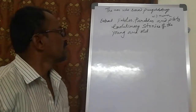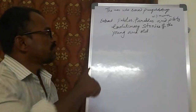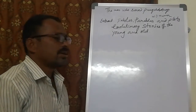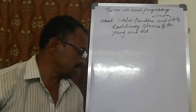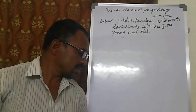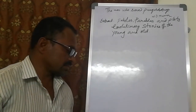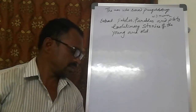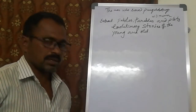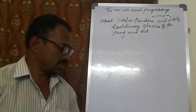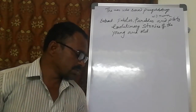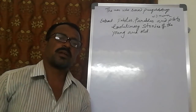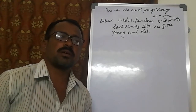The present lesson was taken from 'Fables, Parables and Plots: Revolutionary Stories of Young and Old.' This lesson is taken from this collection of stories. The main theme of the lesson talks about the economic principles in the circulation of money.